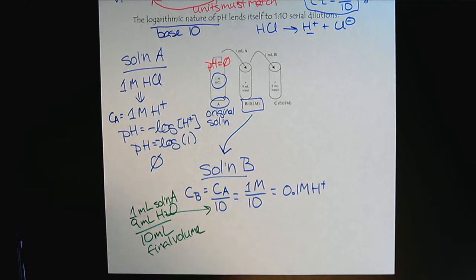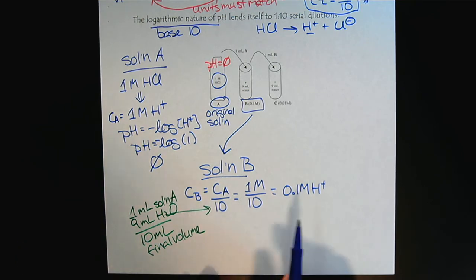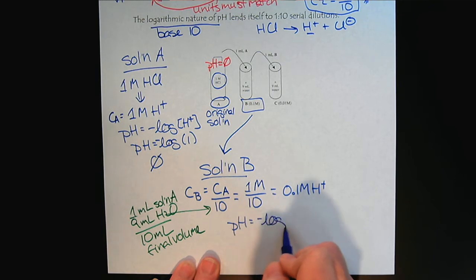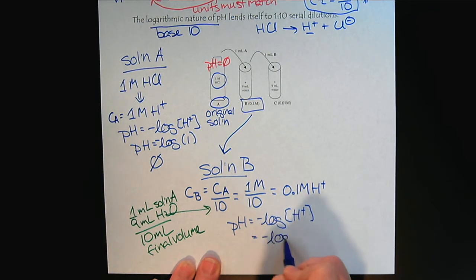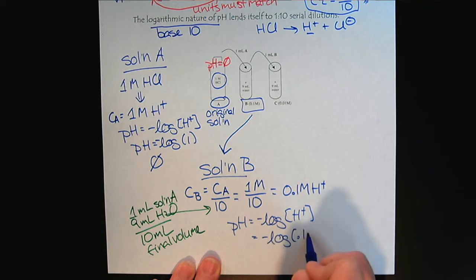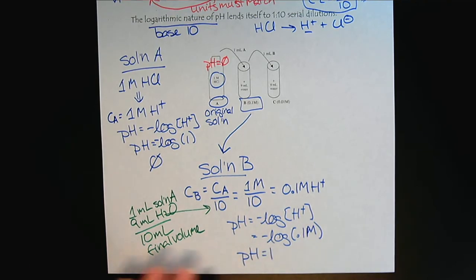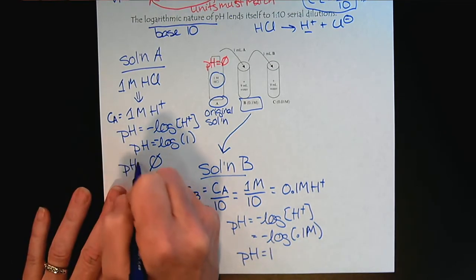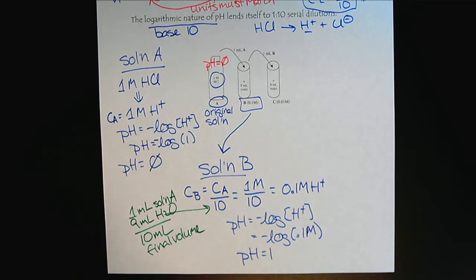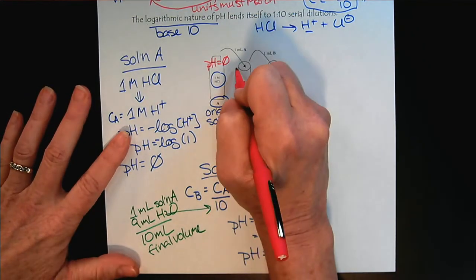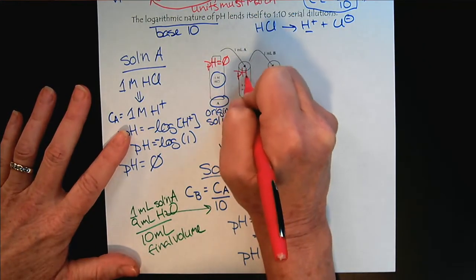So from there, then the pH is the negative log of H+, which we have calculated to be 0.1 molar. So the pH equals 1. So now we can put that information on our diagram. pH equals 1.